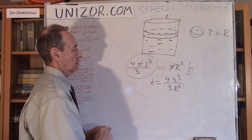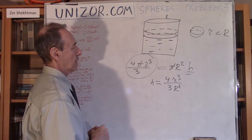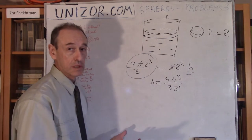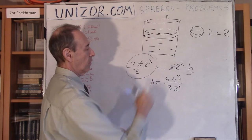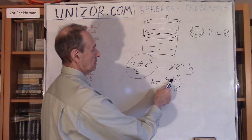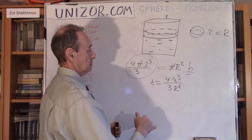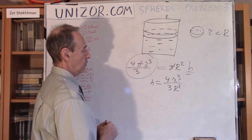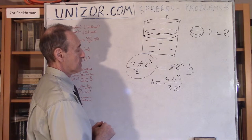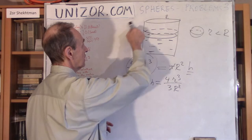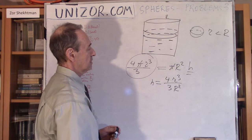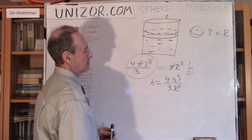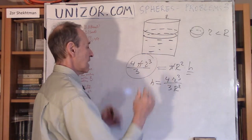That's the height the water rises. Obviously, if capital R is very big, then h would be smaller. And if lowercase r gets greater with a fixed radius of the cylinder, this h will increase. We could also think about, depending on the existing height of the cylinder, how big the radius of the ball might need to be to completely fill up the glass — but that's another problem.